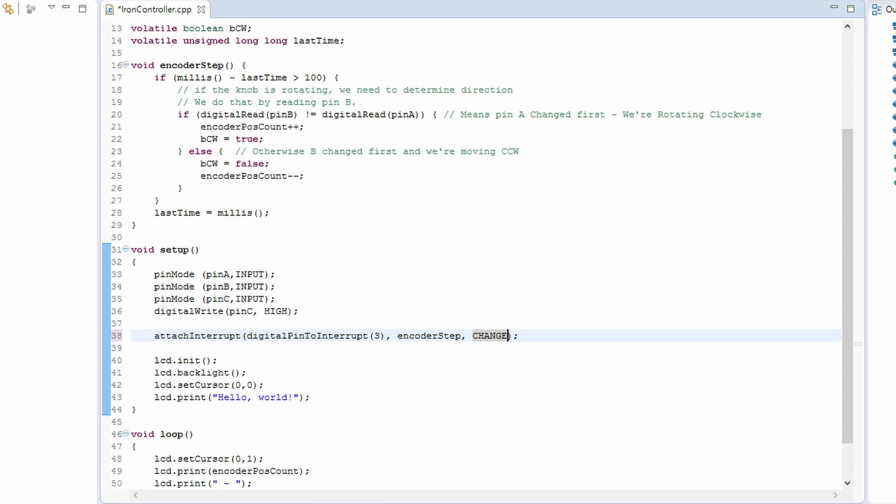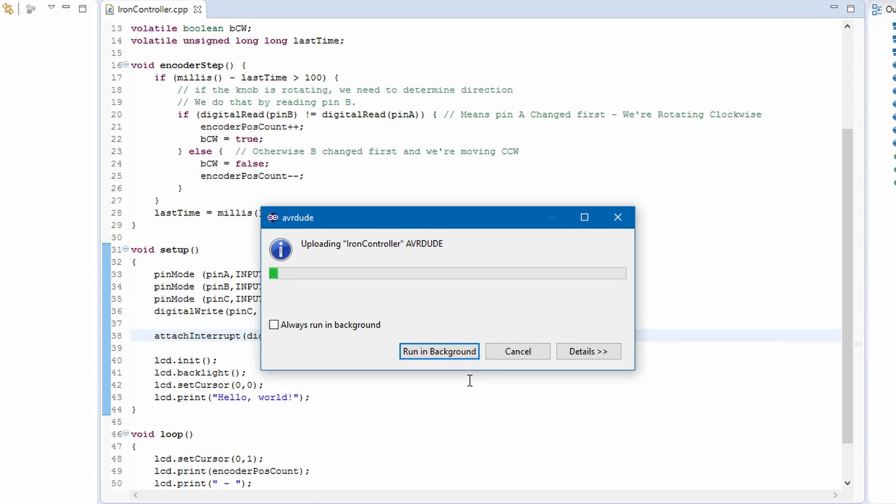To fix the skipped steps, we'll move the handling into an interrupt and add a check if 100 milliseconds has passed to avoid issues relating to contact bouncing.